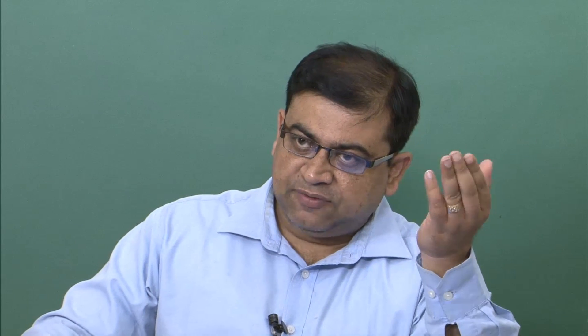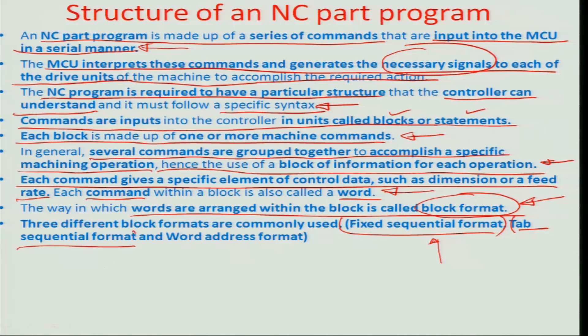The fixed sequential format had unnecessary repetitions that were time-consuming. The next format utilized the tab key, so repeated values from the previous line could be carried forward without re-entering them, saving programming time — this became known as the tab sequential format. The latest format adds words alongside numbers, making it possible to easily identify each unit command within a block, and I will show all of these through practical examples.